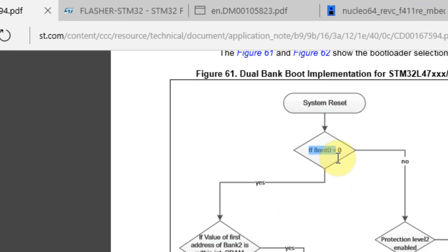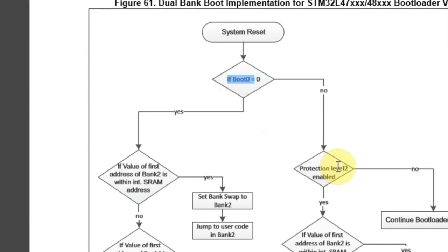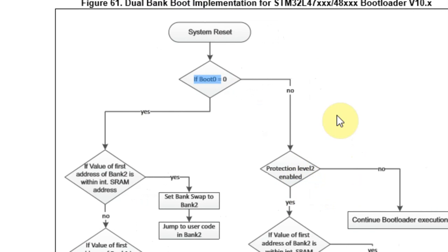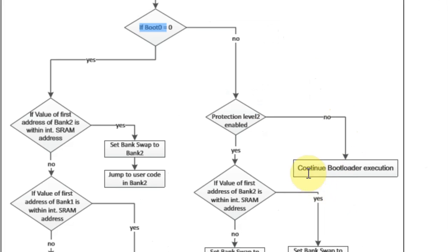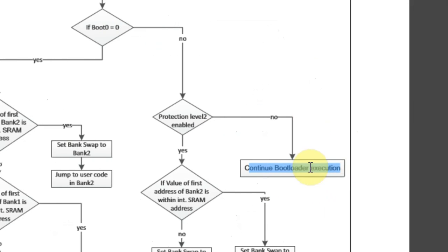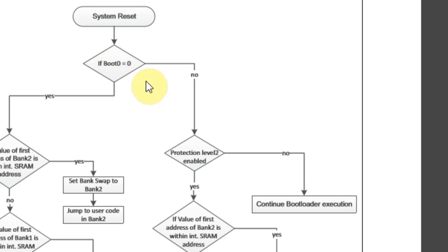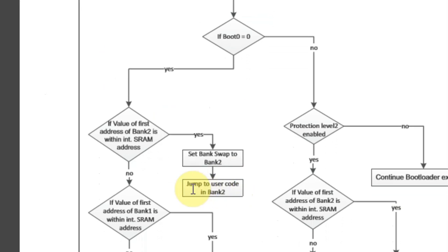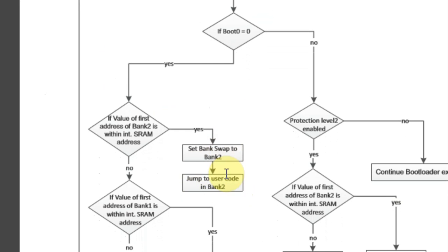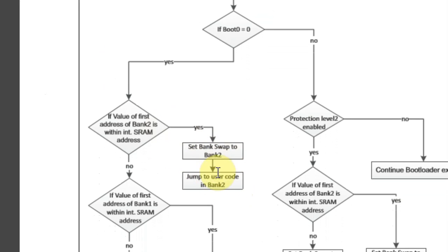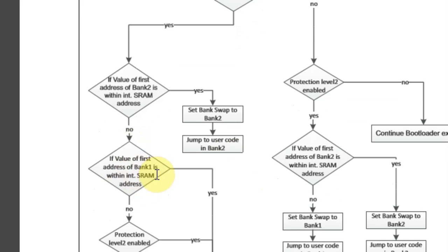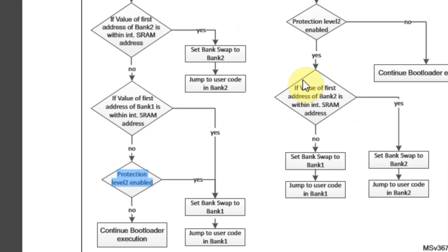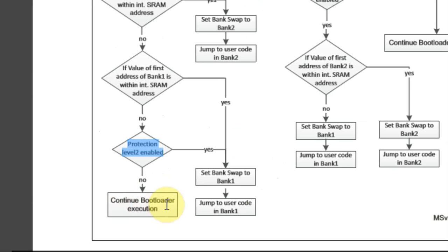Going back to the application note: if Boot0 is grounded as it always is, and if it's protection level 2, this is how protected the device is. If it's not protected, then continue bootloader execution and our software runs as usual. If the Boot0 pin is tied high — Boot0 equals 1 — it checks if the first address of bank 2 is within the SRAM address. If set to swap bank 2, it jumps to user code. If not, it goes to bank 1. If the device is not at protection level 2, then continue with bootloader execution.